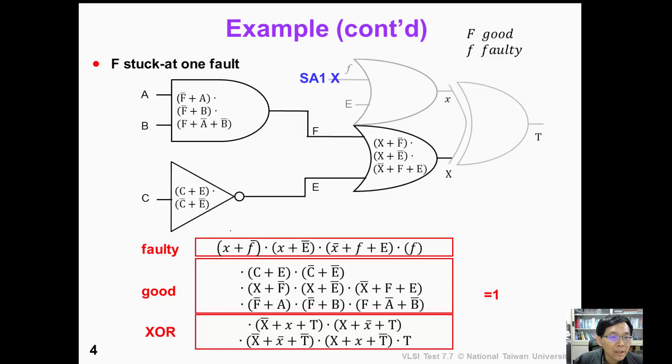Now let's see an example. Suppose we want to generate a test for this circuit. F stuck-at-1 fault is sitting here. First of all, we need to create a faulty copy for this circuit.